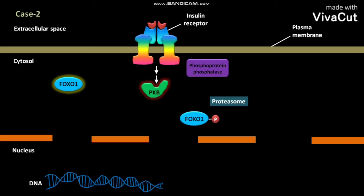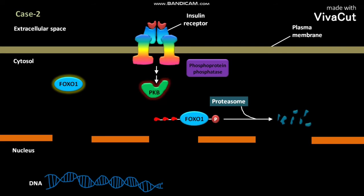The phosphorylated FOXO1 then attaches to ubiquitin. The ubiquitin-attached phosphorylated FOXO1 then goes to the proteasome, where FOXO1 is degraded.